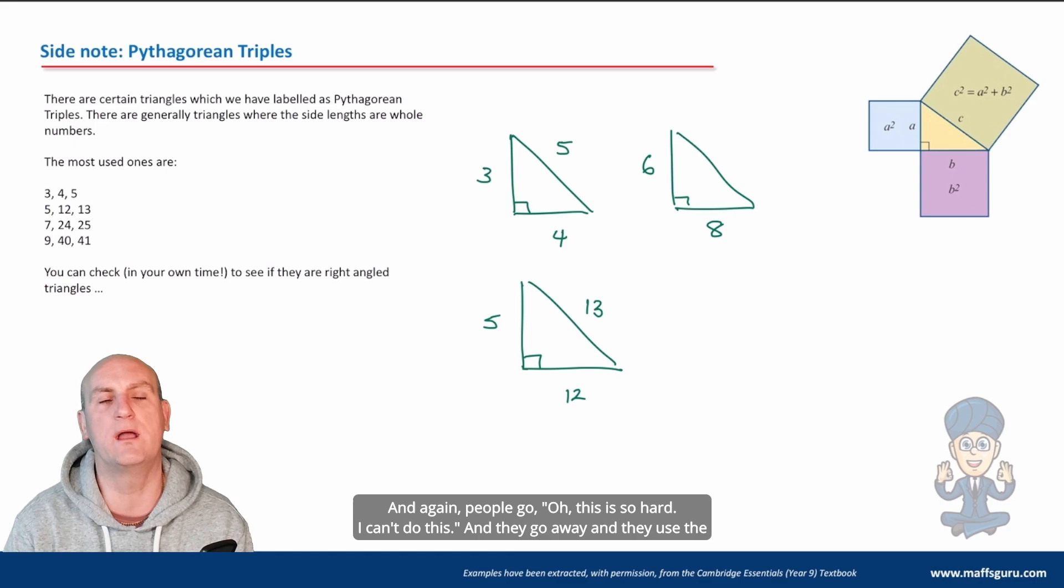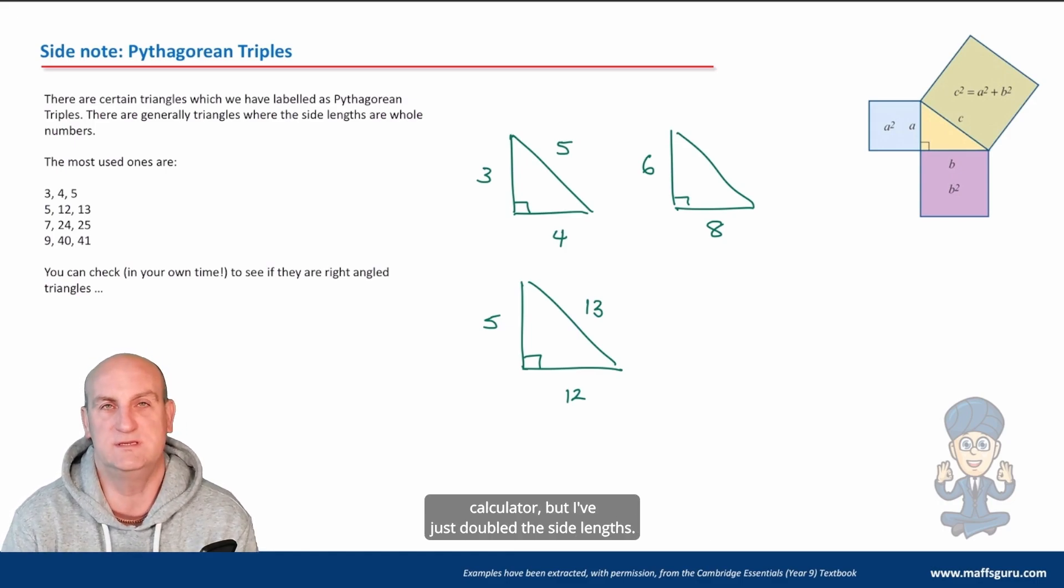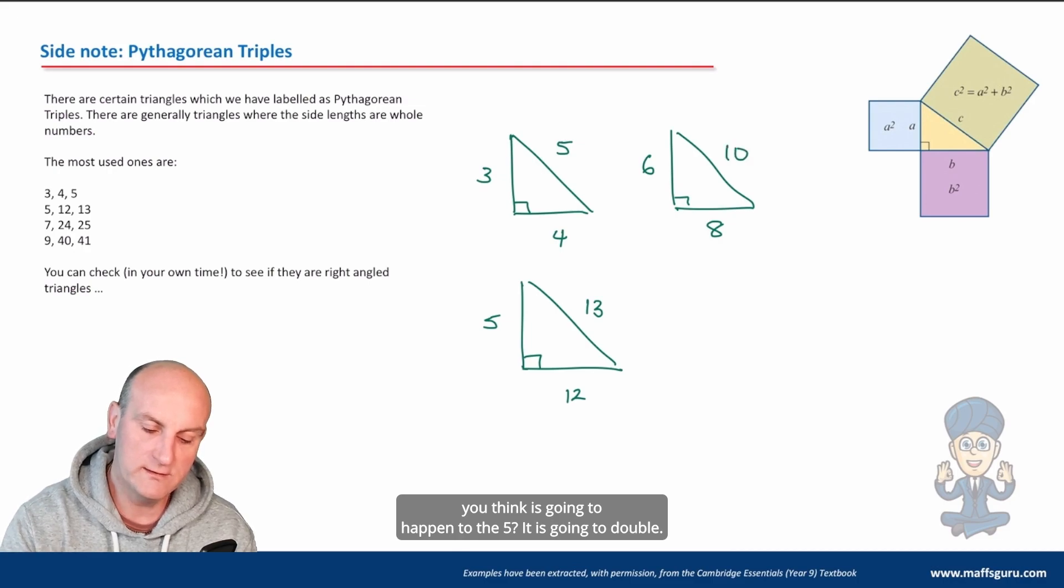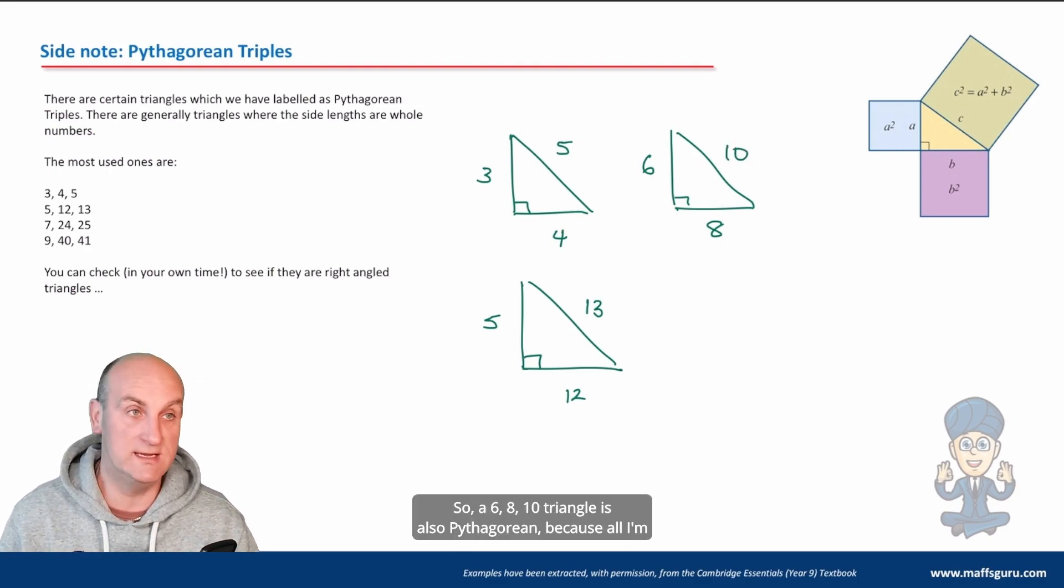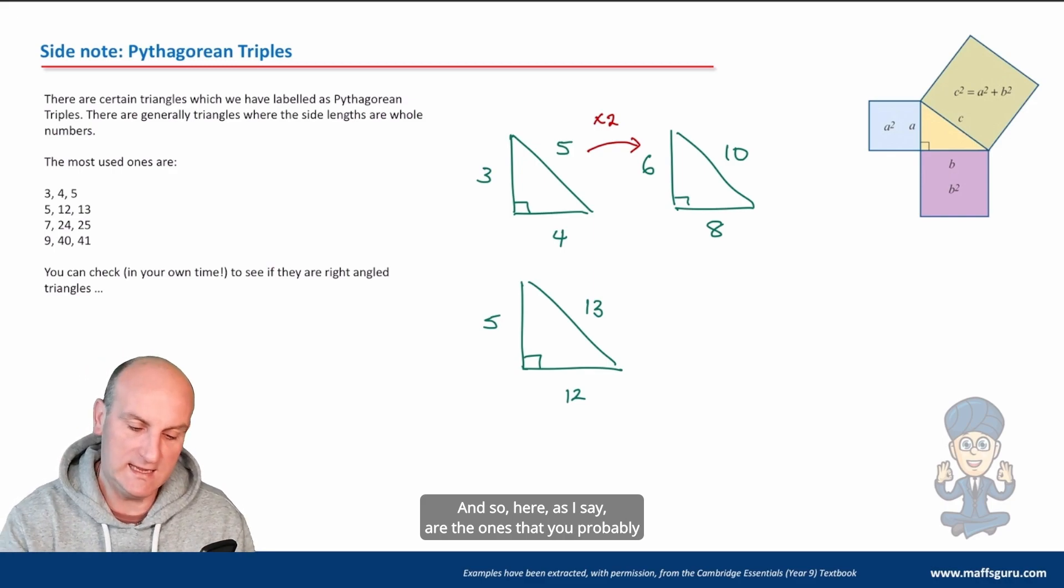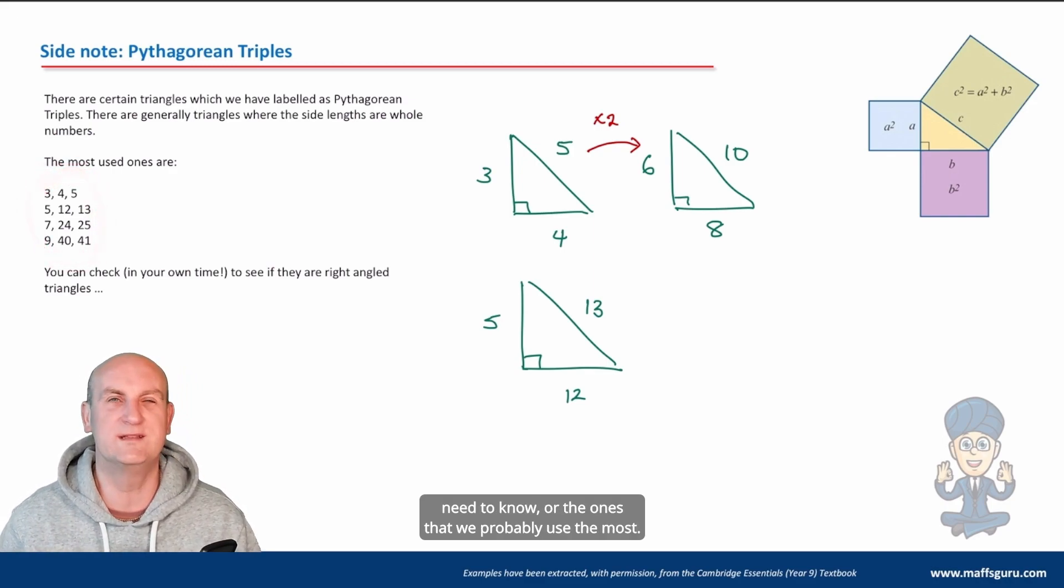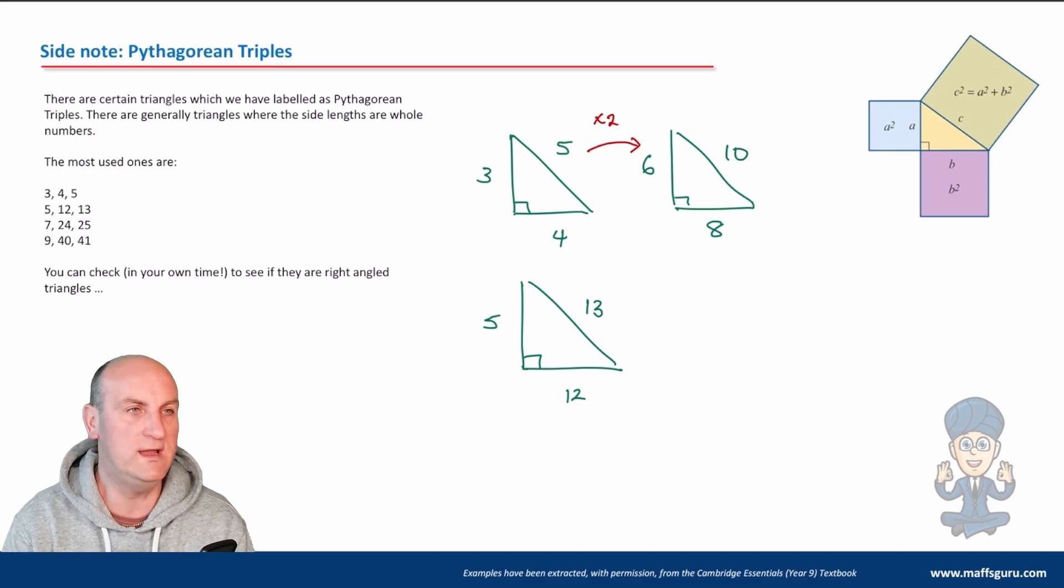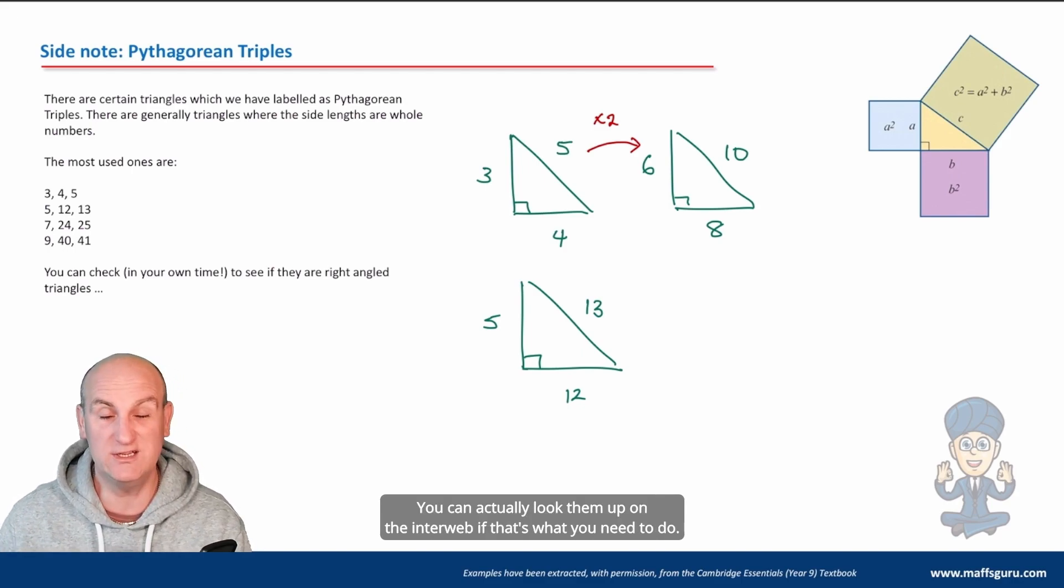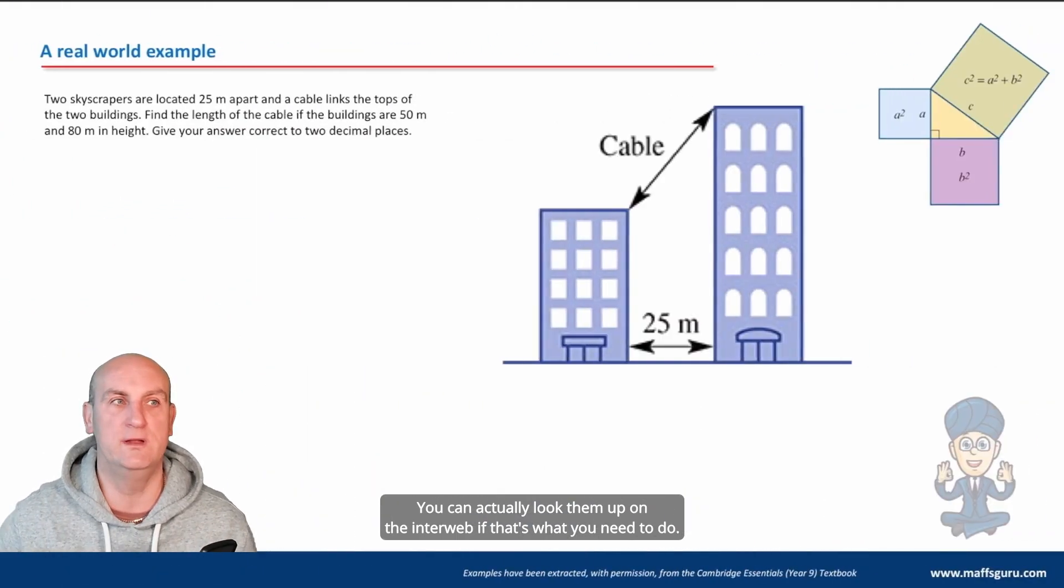So I might make that 6 and 8. And people go, oh, this is so hard. I can't do this. And they use the calculator, but I've just doubled the side lengths. So if I've doubled the 3 and I've doubled the 4, what do you think is going to happen to the 5? It is going to double. So a 6, 8, 10 triangle is also Pythagorean because I'm multiplying all my side lengths by 2. Here are the ones you probably need to know: 3, 4, 5; 5, 12, 13; 7, 24, 25; and 9, 40, 41. There are so many more. You can look them up on the interweb if you need to.